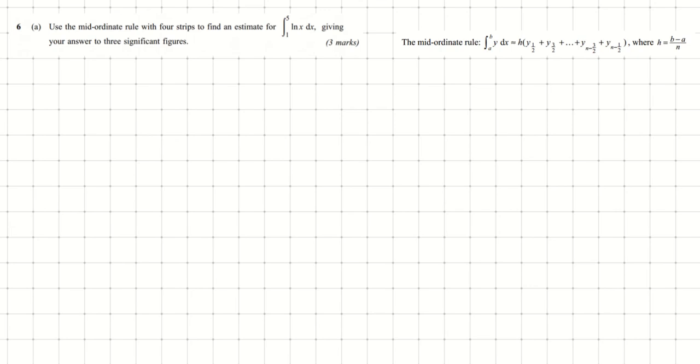The first thing when using the mid-ordinate rule is to find the width of our strips, called h. h is given by (b-a)/n, where b is the upper limit of our integral (5), a is the lower limit (1), and n is the number of strips (4). So we get (5-1)/4 = 4/4 = 1, so h equals 1 in this question.